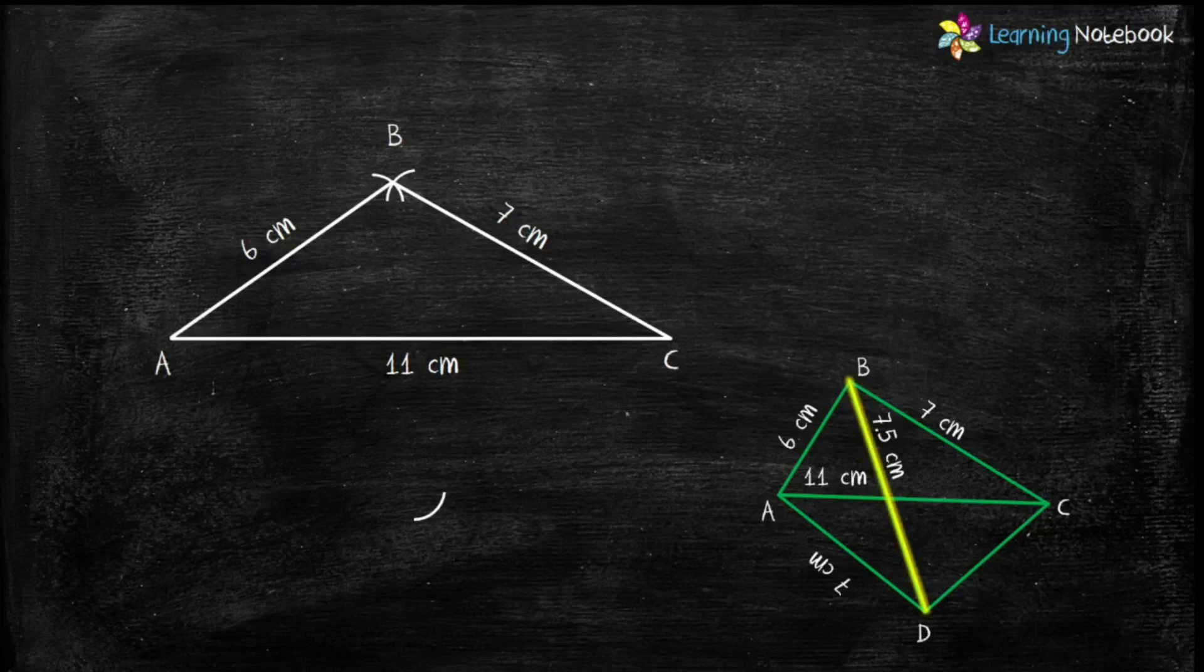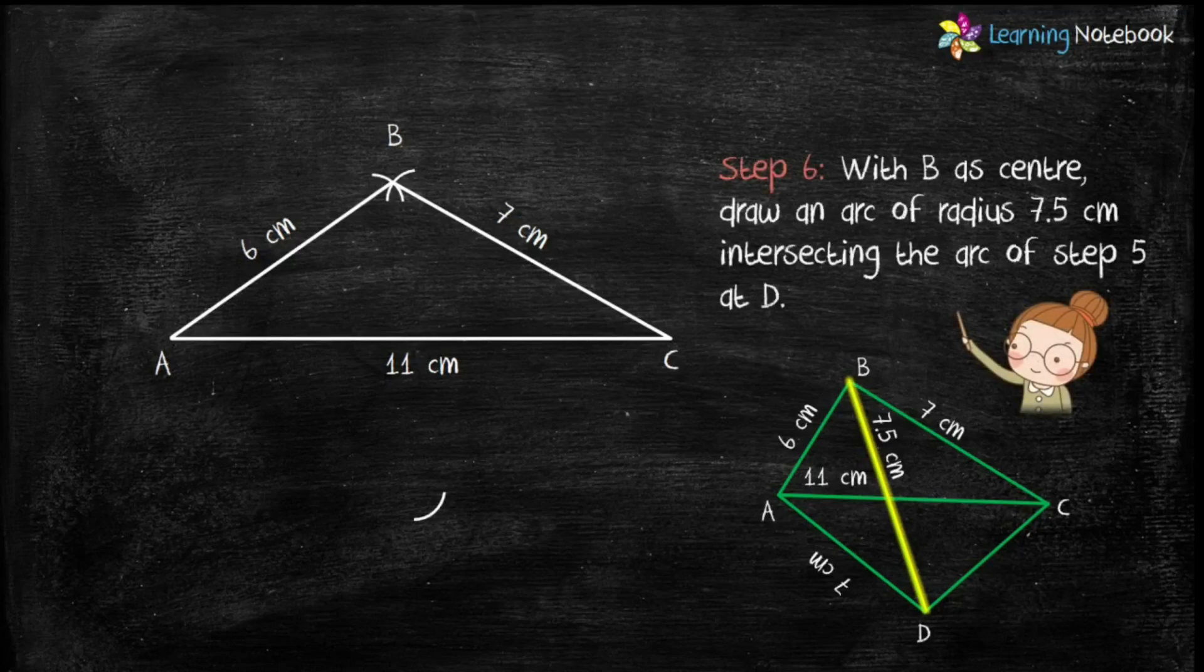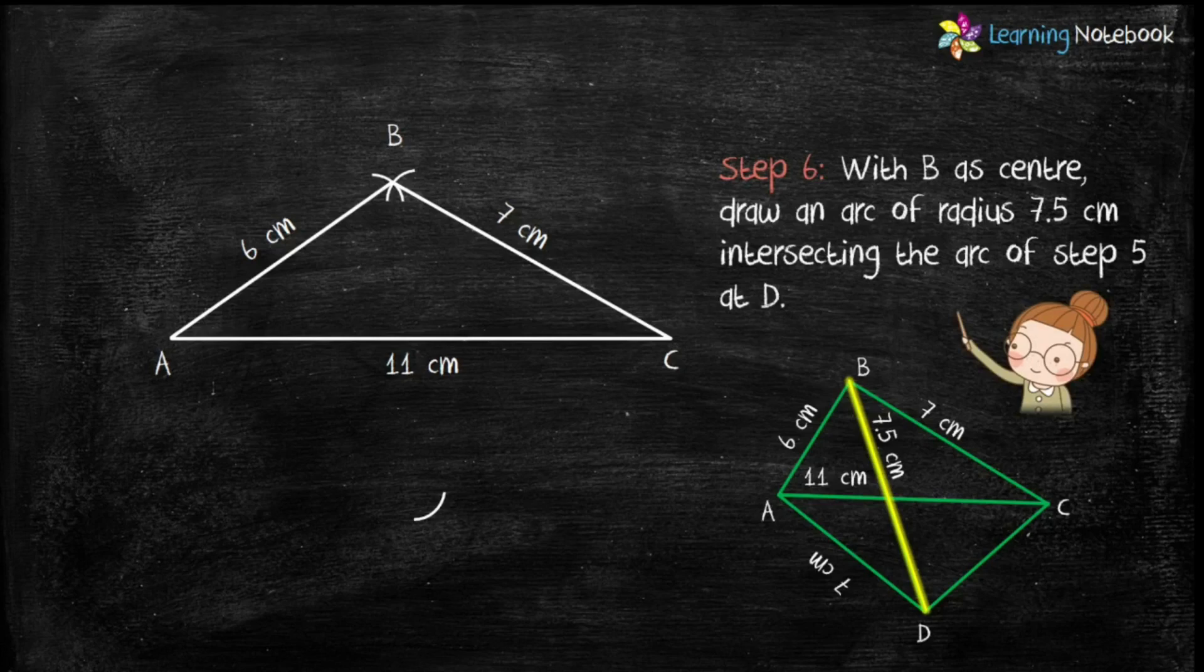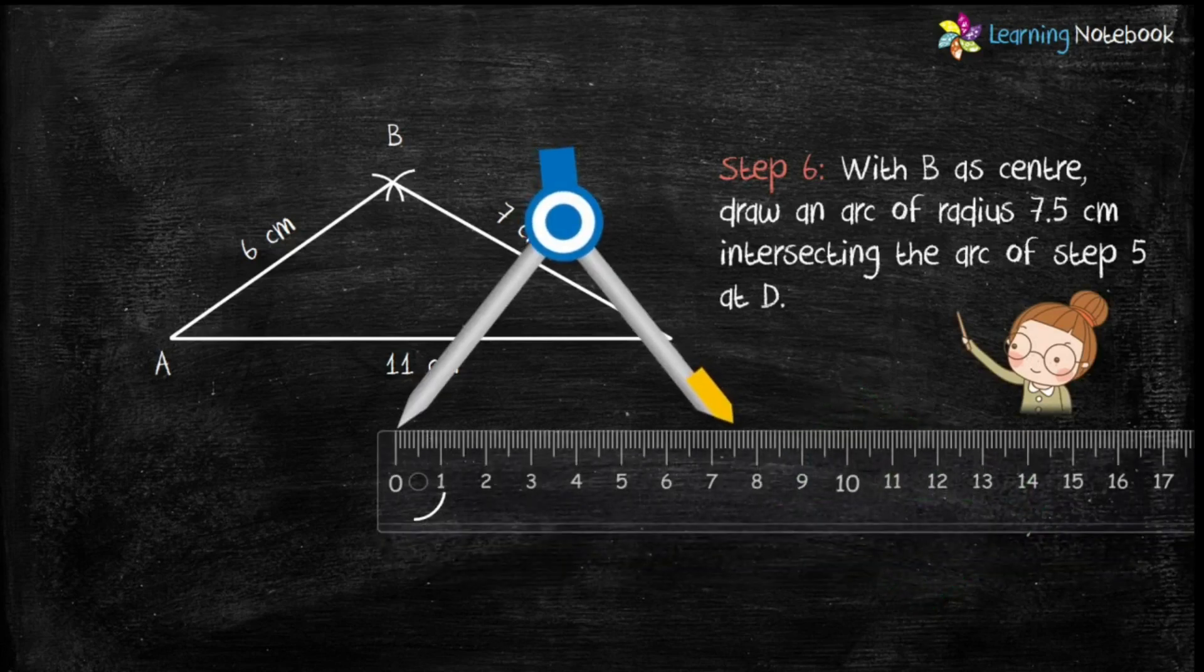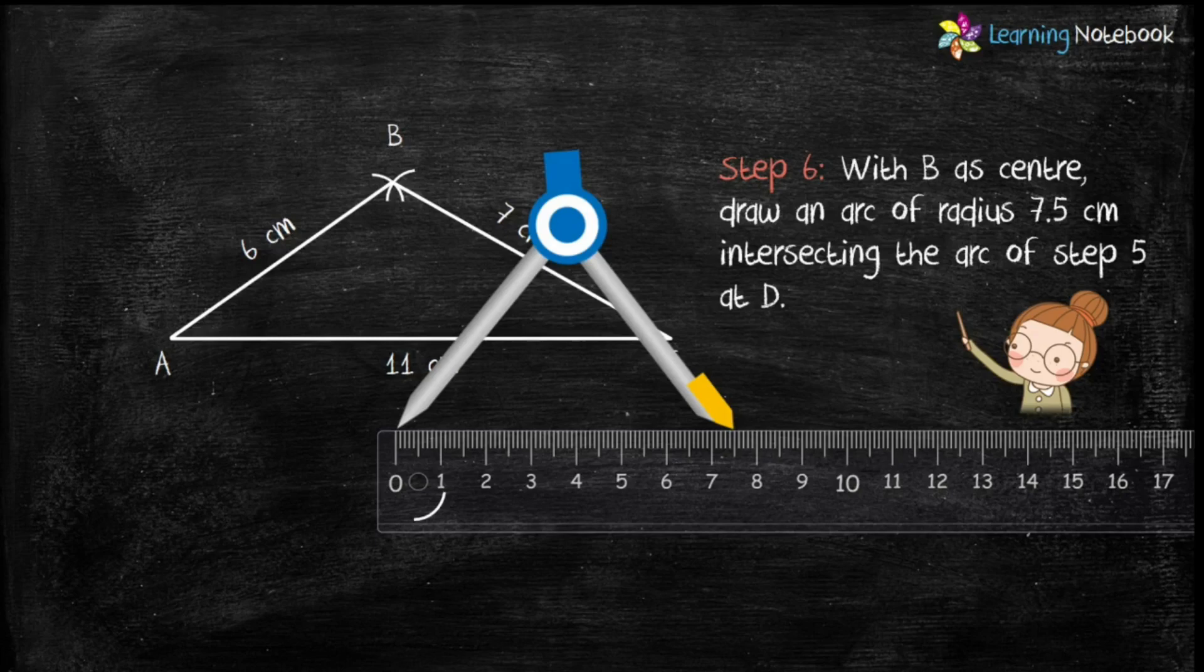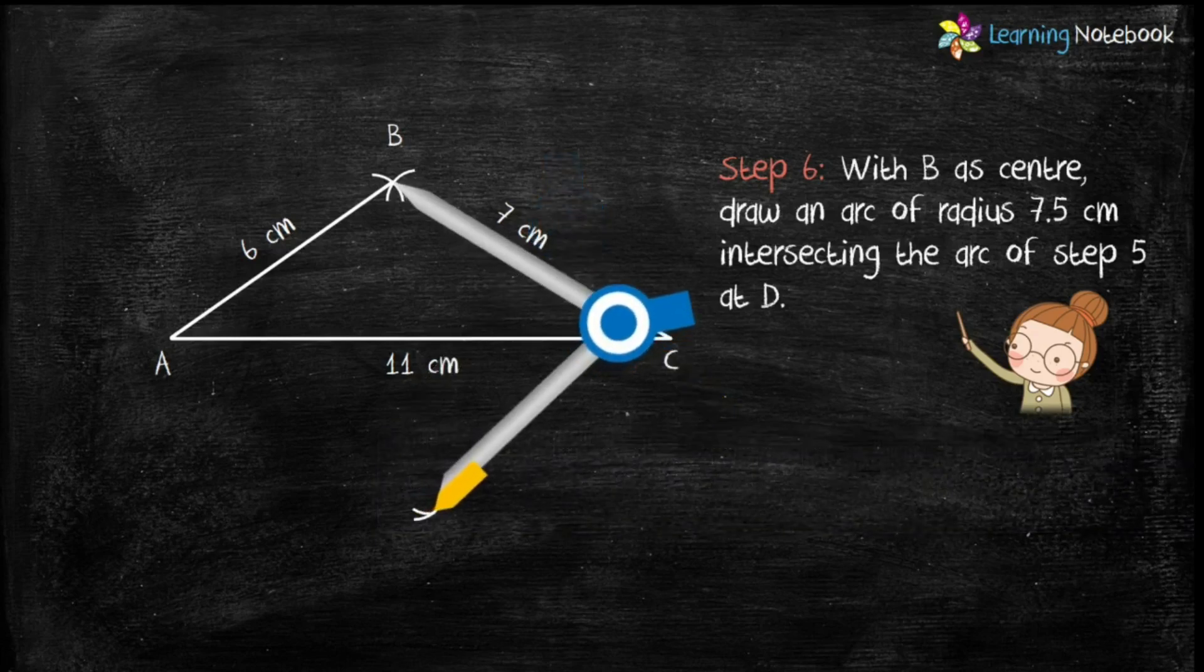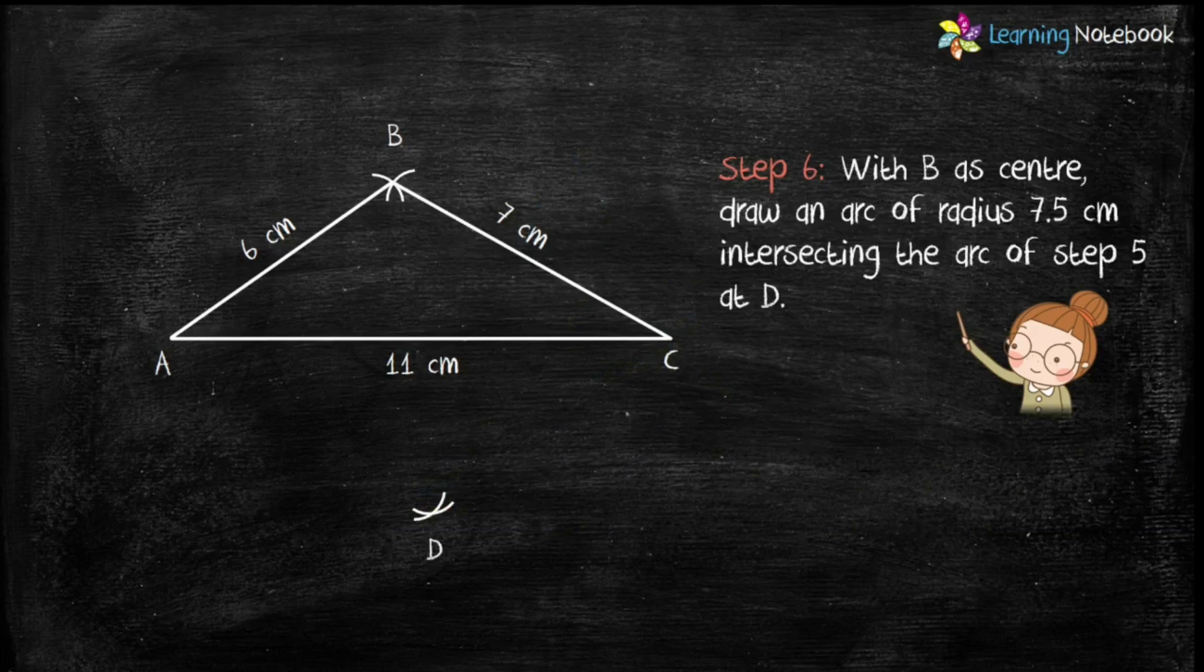Let's construct diagonal BD which is given as 7.5 cm. So for step 6, open the compass with radius 7.5 cm and with B as center draw an arc. Students, this arc will intersect the arc of step 5 at point D.